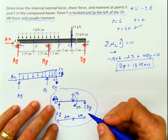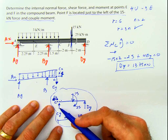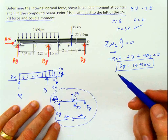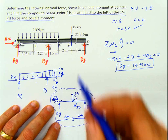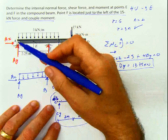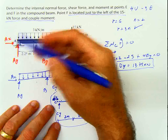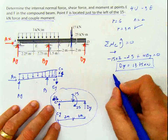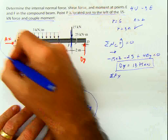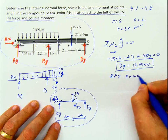For this particular problem, I have no interest in calculating CY or CX because the problem only asks for forces at F and E. But I definitely need to calculate Ax and Ay. Ax is easy: doing summation of forces in x for the whole beam, Ax equals 0.